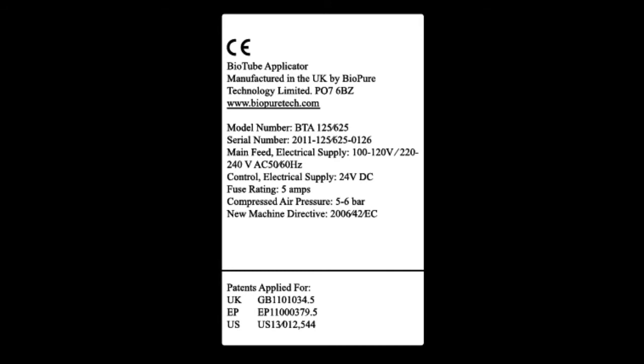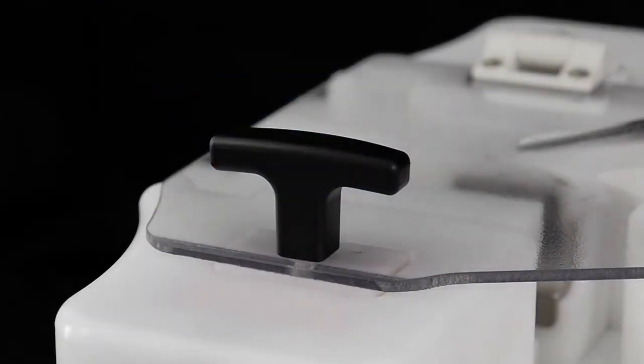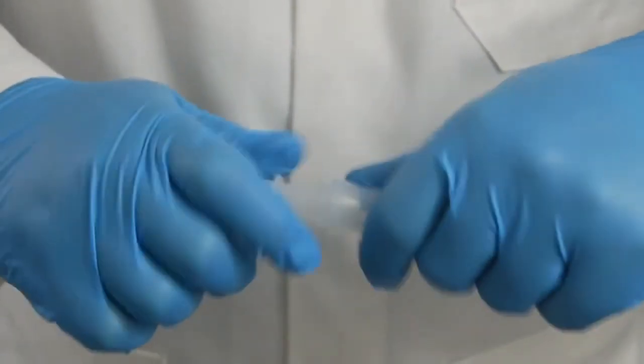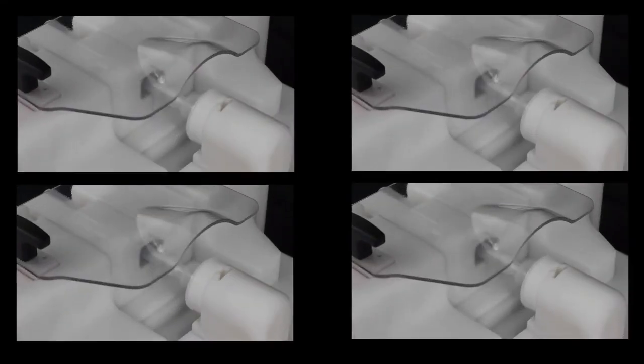supplied CE marked to ensure operator safety. It has inbuilt features such as two-handed operation and an interlock shutdown cover. By removing the need for manual application of tubing, the bio tube applicator provides a repeatable process and can help